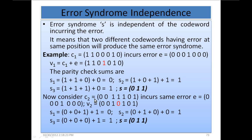Now consider C2 equal to 0, 0, 1, 1, 1, 0, 1. It incurs the same error 0, 0, 0, 1, 0, 0, 0 — again error at 4th bit, so this 1 has been toggled to 0, giving received codeword 0, 0, 1, 0, 1, 0, 1. The syndrome is calculated the same way: S1 gives 0, S2 gives 1, S3 gives 1. So S is equal to 0, 1, 1. Although the codewords are different, if the error occurs in the 4th bit, we always get the same syndrome, confirming that the syndrome identifies the location of the error bit.